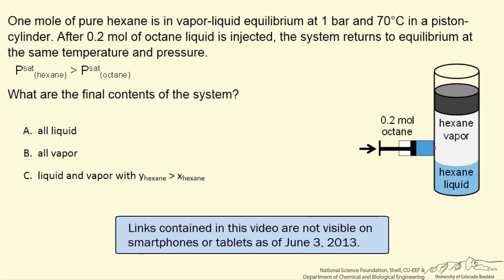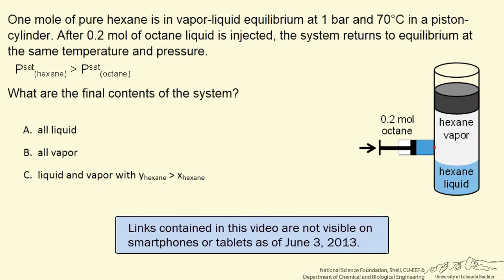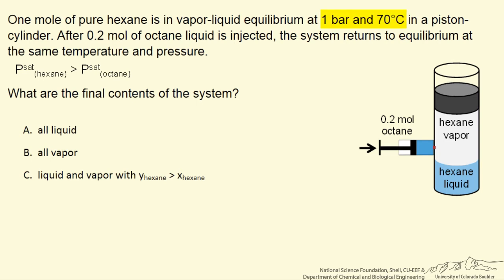We have a piston and cylinder arrangement in which liquid hexane is in equilibrium with hexane vapor at 1 bar and 70 degrees.